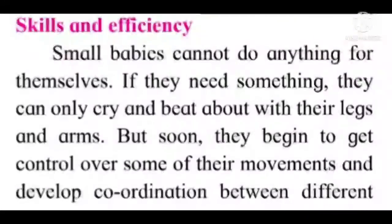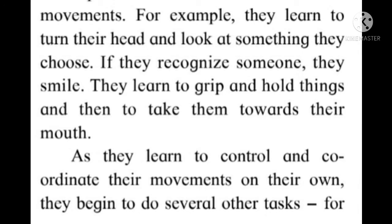Small babies cannot do anything for themselves. If they need something, they can only cry and beat about with their legs and arms. But soon they begin to get control over some of their movements and develop coordination between different movements. For example, they learn to turn their head and look at something they choose. If they recognize someone, they smile. They learn to grip and hold things and then take them towards their mouth.